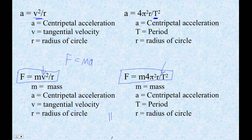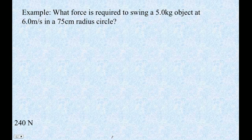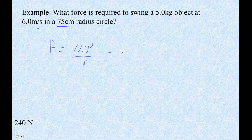I'm going to do another example of this. It's really not very hard. So, a 5 kilogram object, 6 meters per second, 75 centimeter radius circle. Since it's velocity, I have to use the formula F equals mv squared over r. So that's going to be 5.0 kilograms times v, which is 6.0 meters per second — you've got to square that, mv squared.